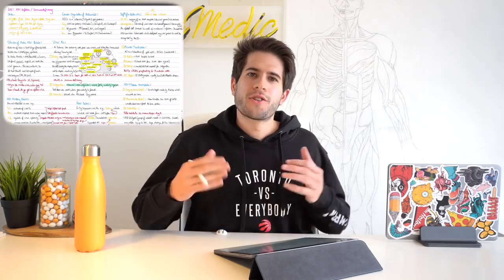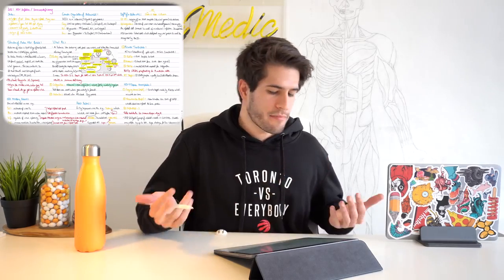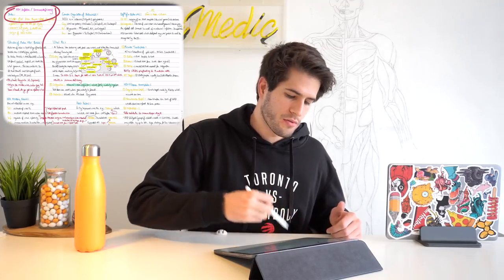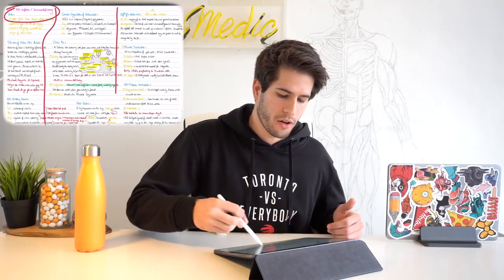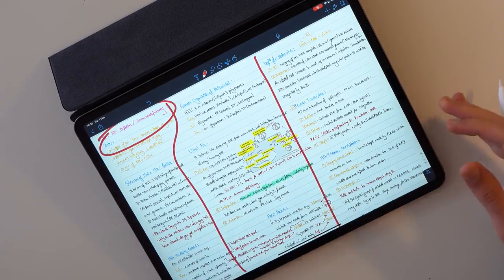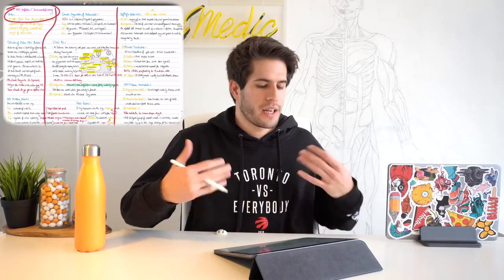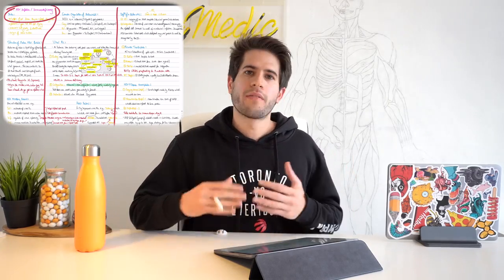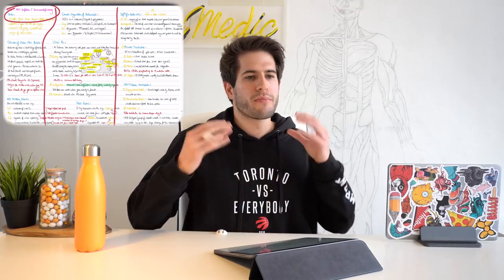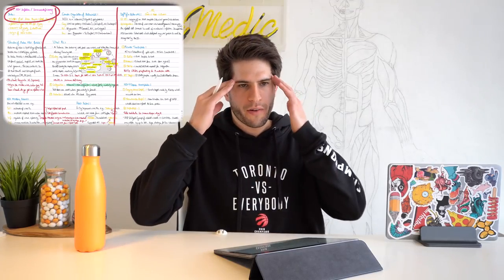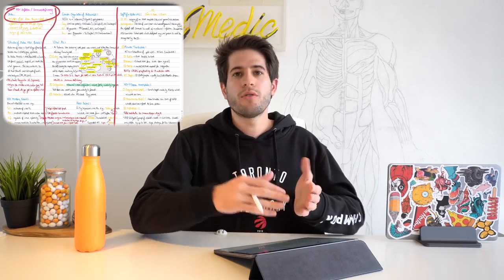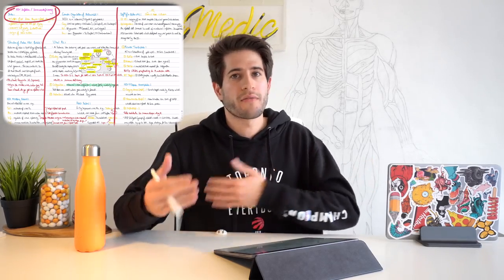Without further ado, let's jump straight into the color coding of my notes. Generally, a set of my notes will have a title in the top left corner and then the page will be divided into about three columns — the left, the middle, and the right. I do this for increased hierarchy and organization of the page. A very good memorization technique for me is remembering where the information was physically on the page, whether it was in the top left corner, in the middle, or in the top right.